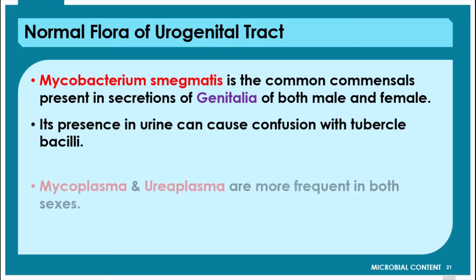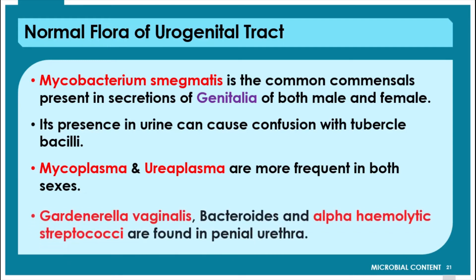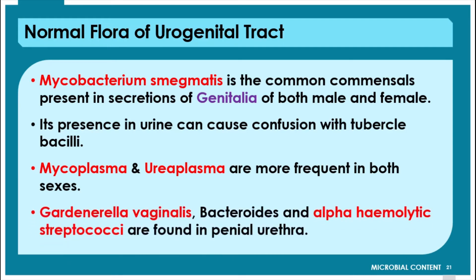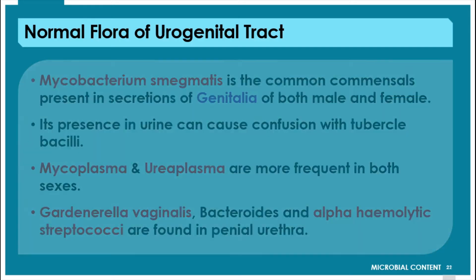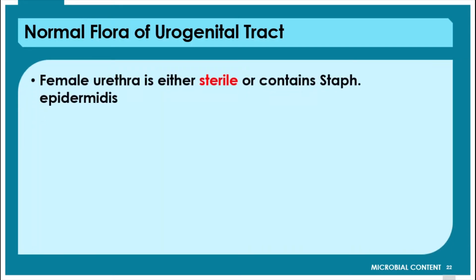Mycoplasma and Ureaplasma are more frequent in both sexes. Gardnerella vaginalis, Bacteroides, and alpha-hemolytic Streptococcus are found in the penile urethra. The female urethra is either sterile or contains Staphylococcus epidermidis.